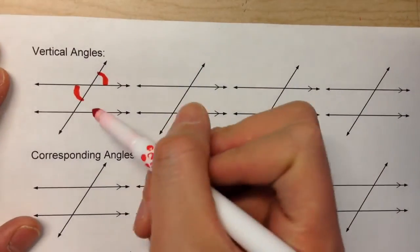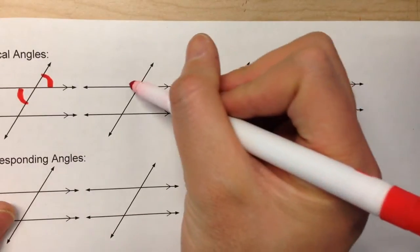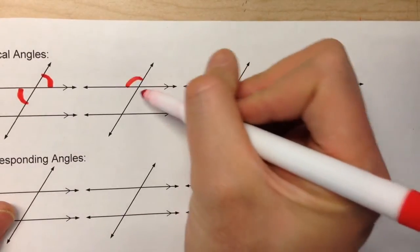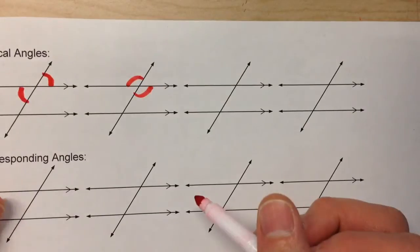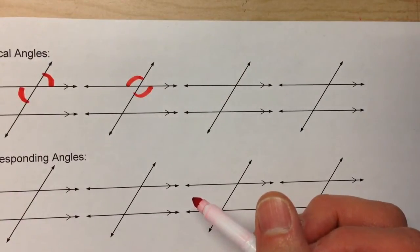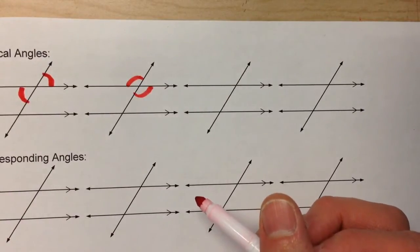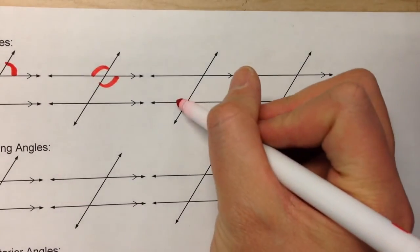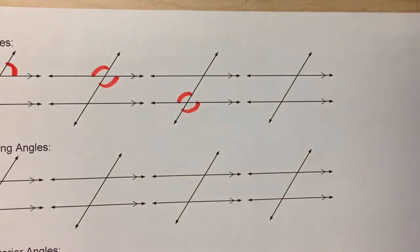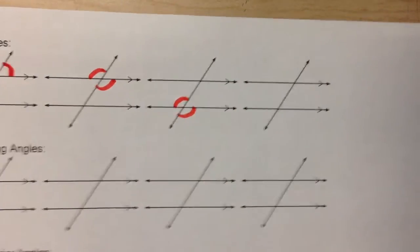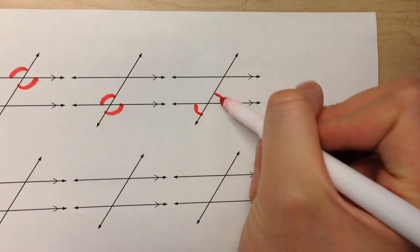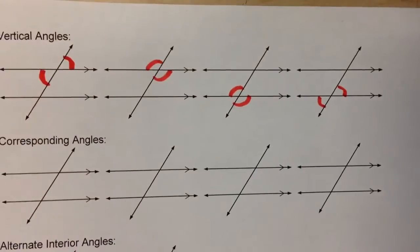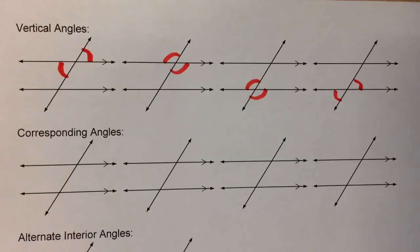Or this one right here and this one — they're across from each other, so they're equal in measure because they're vertical angles. Or this one and this one, or this one and this one. So each of those pairs of angles are vertical angles and are equal in measure.